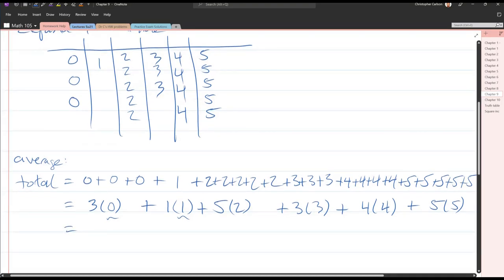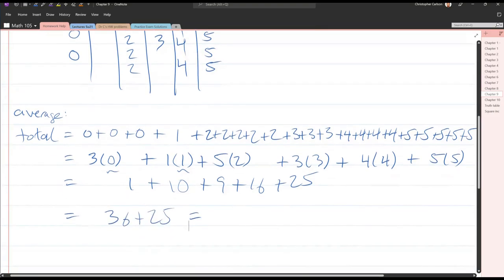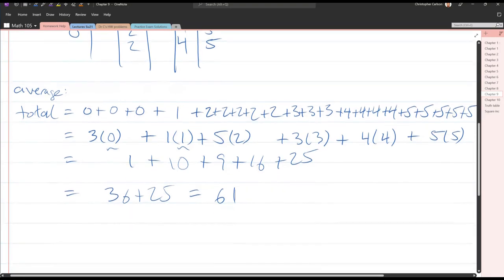Alright, add all this together. 0 plus 1 plus 10, plus 9 is 20, plus 16 is 36, plus 25 - 1 carry 1, 3 and 2 and 1 is 61. Alright, that's our total. It's not the mean yet.